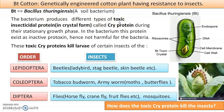This bacterium produces different types of toxic protein — insecticidal protein which kills insects. This protein is secreted by the bacteria in crystal form; it is crystalline, not soluble, and is named cry protein. When you write the protein name, you write 'Cry' with a capital C. During their stationary growth phase, when endospores are formed, a crystal protein is formed in the bacterium.